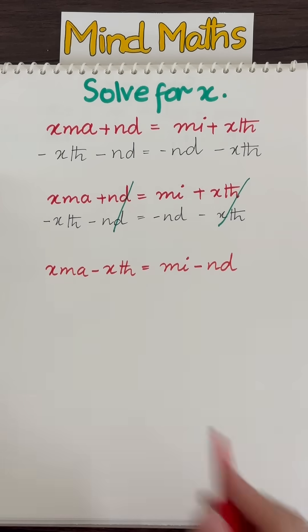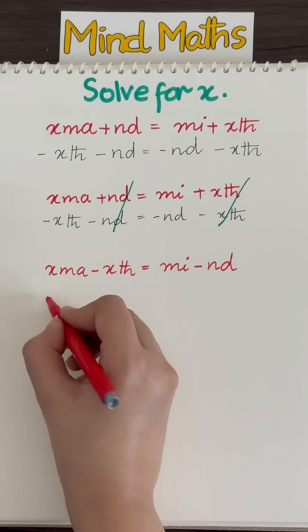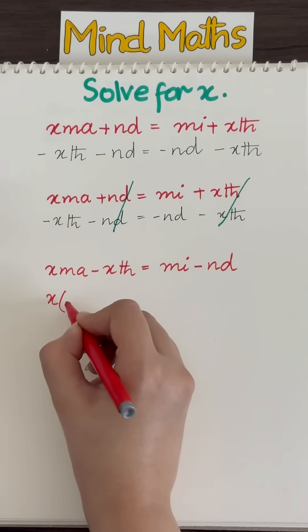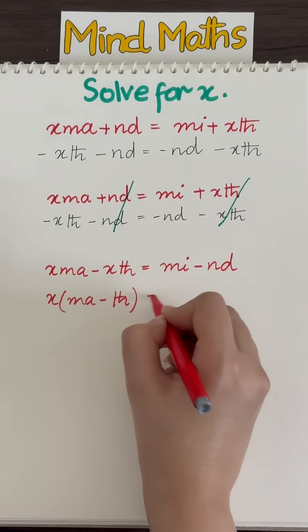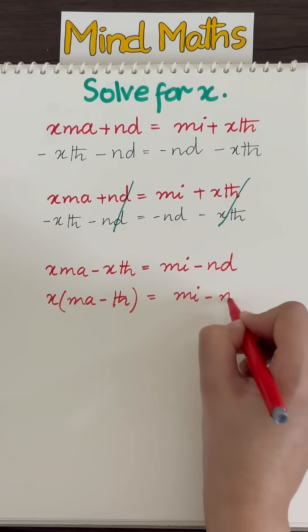Now all the X's are on the same side, and every term has an X. So let's factor out that X. When we factor the X out of this first term, MA minus TH is remaining. We're not going to make any changes to the right-hand side.